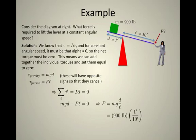In this case, d is 1 foot and l is 10 feet, so you end up only having to pull downward with a force of 90 pounds. That's why a lever works so well.